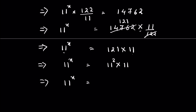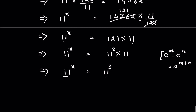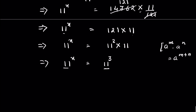11 raised to the power x equals — again using the identity a raised to the power m times a raised to the power n equals a raised to the power m plus n — 11 raised to the power 2 plus 1, that is 3. Both the bases are the same, which means x equals 3. This is our answer. Like and subscribe, thanks for watching.